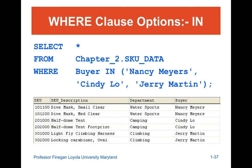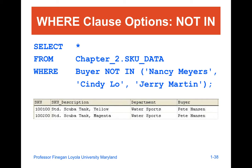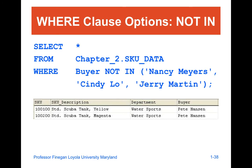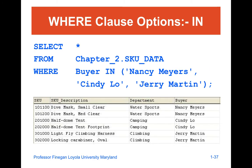Besides AND and OR, you also have the IN component, which is going to show the information for those items. You also have NOT IN, showing records not in that specific value. For the IN statement, it only wants to show records where the buyer is Nancy, Cindy, or Jerry, whereas NOT IN would exclude Pete Hanson.